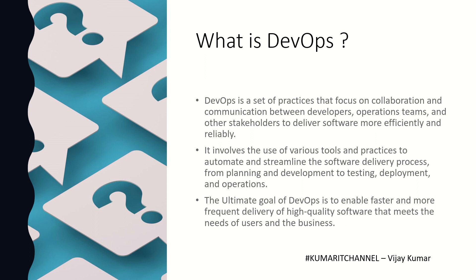DevOps is a set of practices that focus on collaboration and communication between developers and operations teams and other stakeholders to deliver software more efficiently and reliably. It involves various tools and practices to automate and streamline the software delivery process — from planning and development to testing, deployment, and operations. The ultimate goal is to enable faster and more frequent delivery of high-quality software that meets the needs of users and the business.